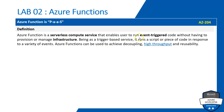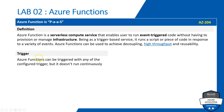Azure Functions is completely based on events — it lets you run a script or a piece of code in response to a variety of events. Azure Functions can be used to achieve decoupling, high throughput, and reusability. Regarding triggers, Azure Functions can be triggered with any of the configured triggers, but it doesn't run continuously. As soon as it receives a trigger, your function app will execute and then wait for the next trigger.